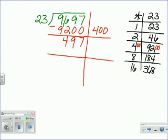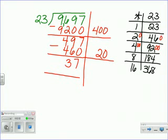I'm going to look at my chart again and I see that I can change the 2 to 20 and 20 times 23 is 460. So I'm going to place my 20 here. Again, 20 times 23 is 460, and I'm going to subtract and I'm all the way down to 37.